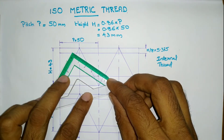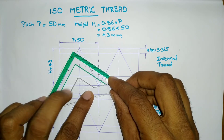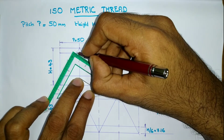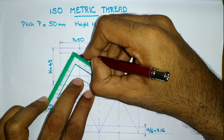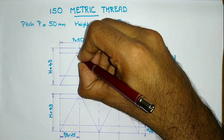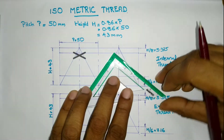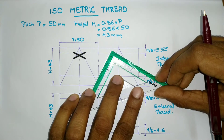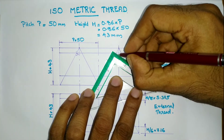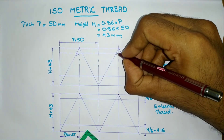Now draw perpendicular lines to the flanks at the top portion of the internal thread. The point where the line touches the construction line will be the center point for the root curvature. Now draw the roots of the internal thread using a compass.